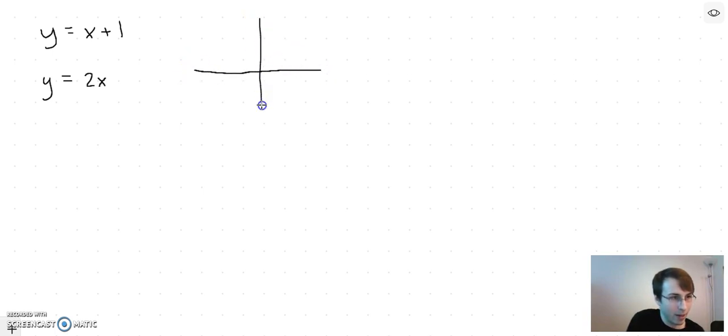So the first line, x plus 1, that's starting at y-intercept 1. It has a slope of 1. So let's just draw some points here, so it looks something like this.